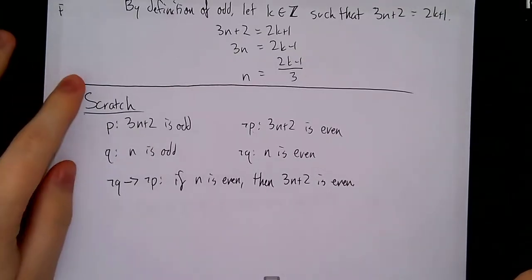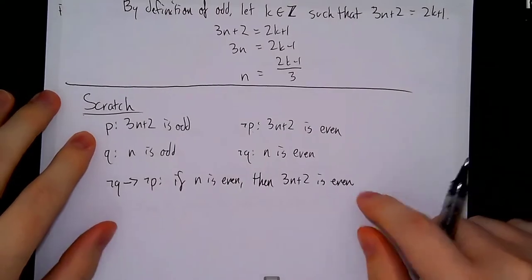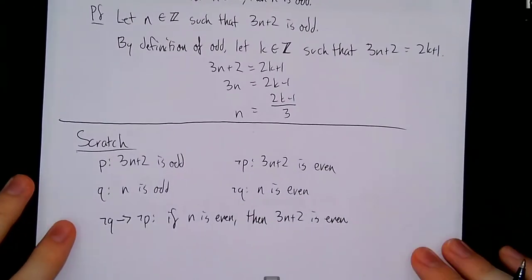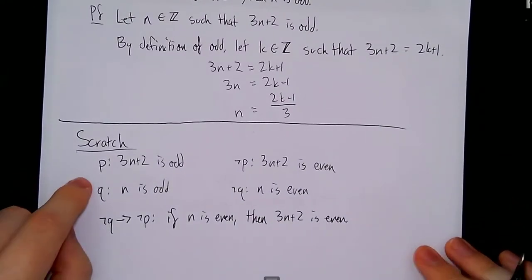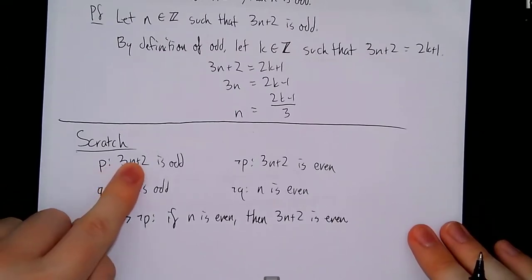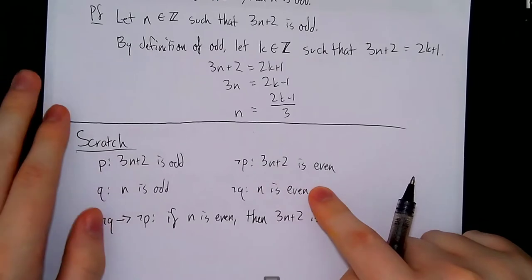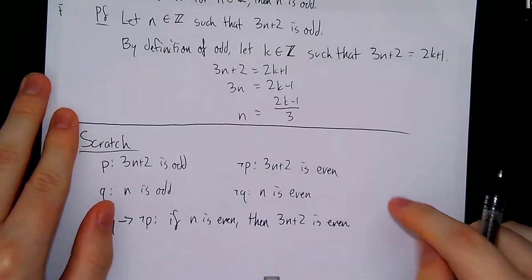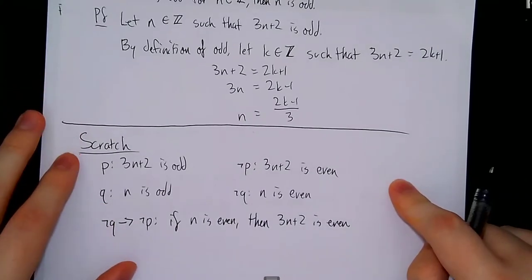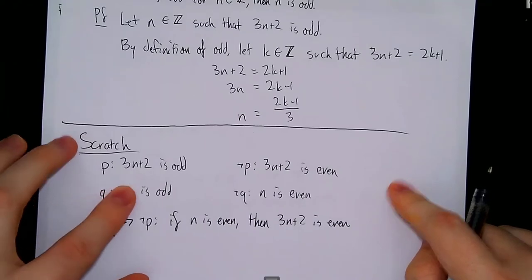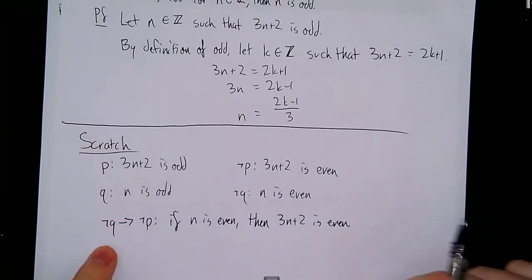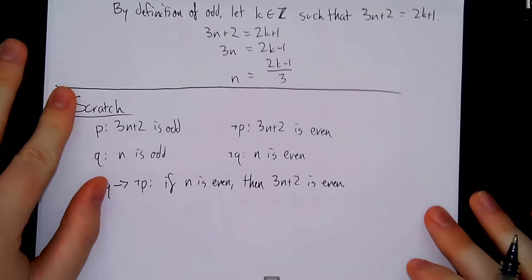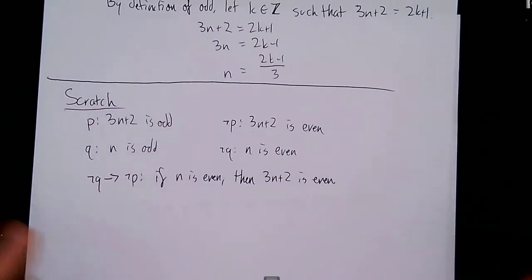I've written out some scratch work. What I'm trying to figure out is how to take this theorem and turn it into its contrapositive. If p is '3n plus 2 is odd,' then not-p is '3n plus 2 is even,' because numbers are either only odd or only even. Similarly, if q is 'n is odd,' then not-q is 'n is even.' This makes not-q implies not-p: if n is even, then 3n plus 2 is even. And already this looks a lot easier to solve.